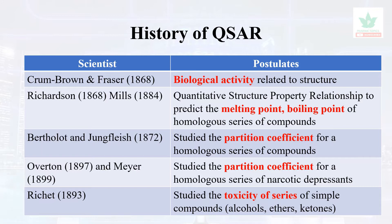In the history of QSAR, there are many scientists. Crum-Brown and Fraser are among the most important. In the case of Richardson, Mills, Berthelot, Jungle Fish, Oort and Mayor — they worked with a series of compounds involving melting point, boiling point, partition coefficient, and toxicity of a series of compounds.